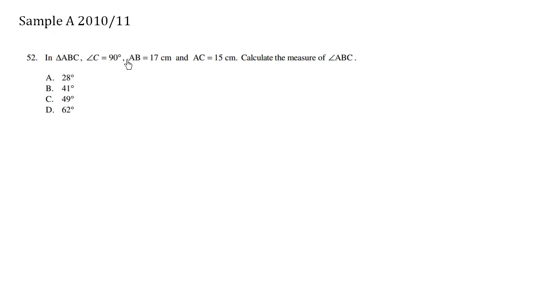In triangle ABC, angle C is 90 degrees, AB is 17 centimeters, and AC is 15 centimeters. Calculate the measure of angle ABC.